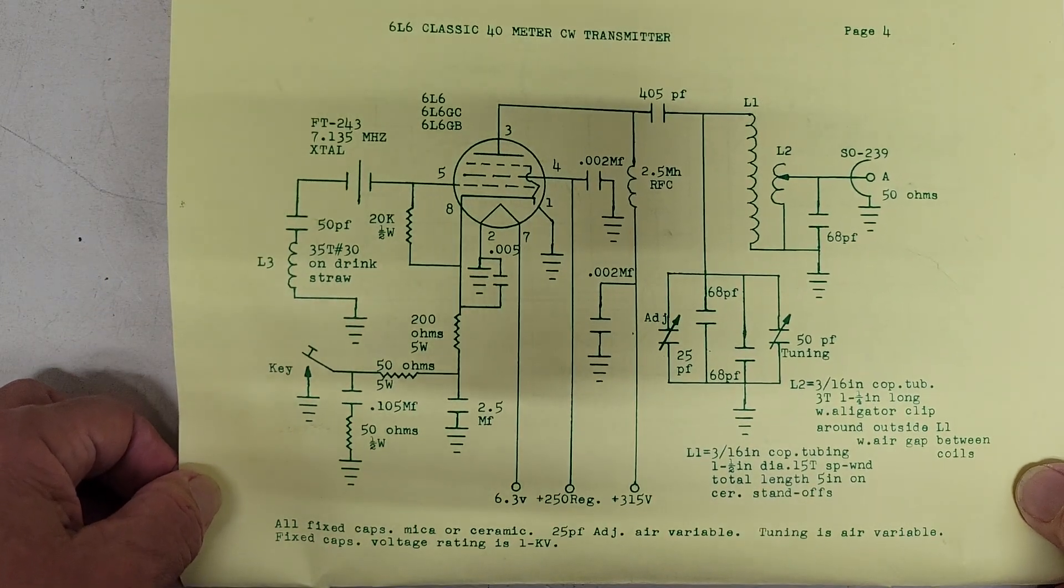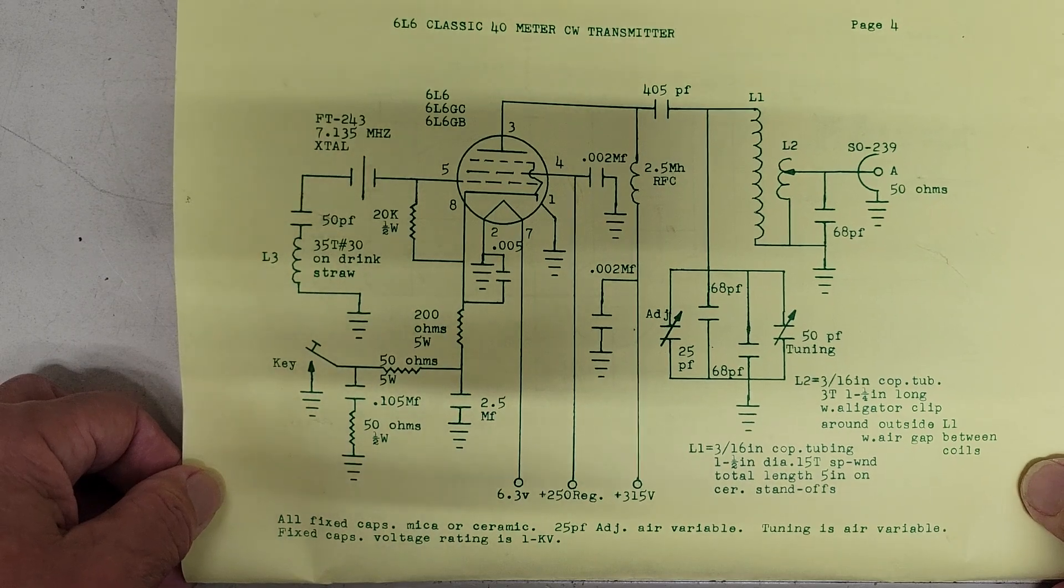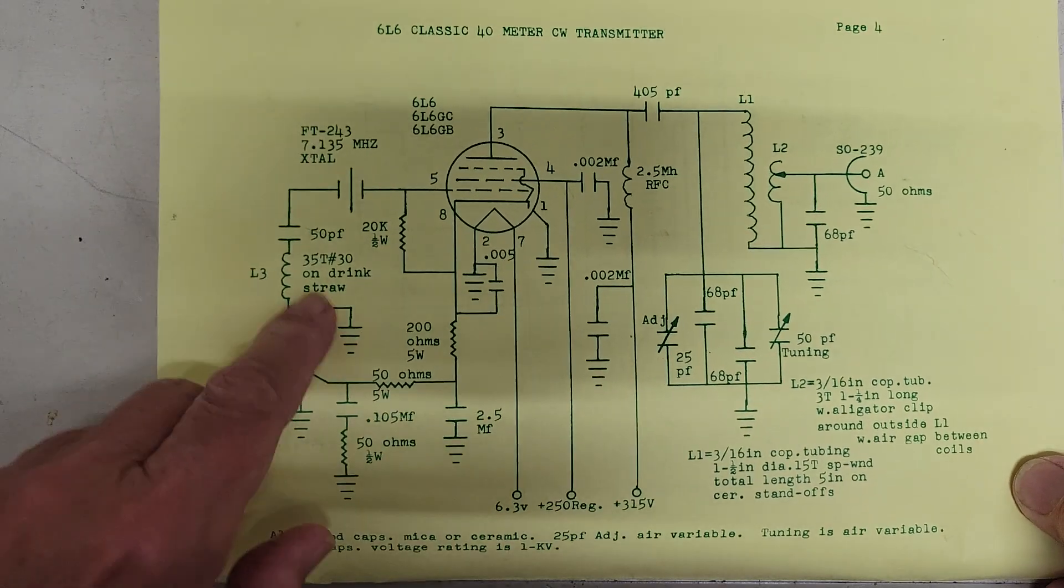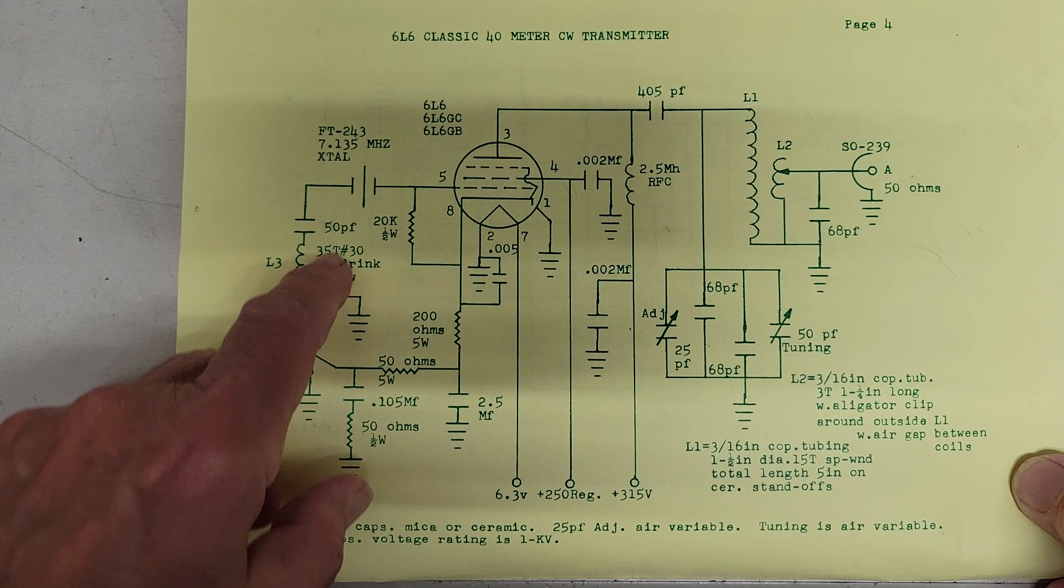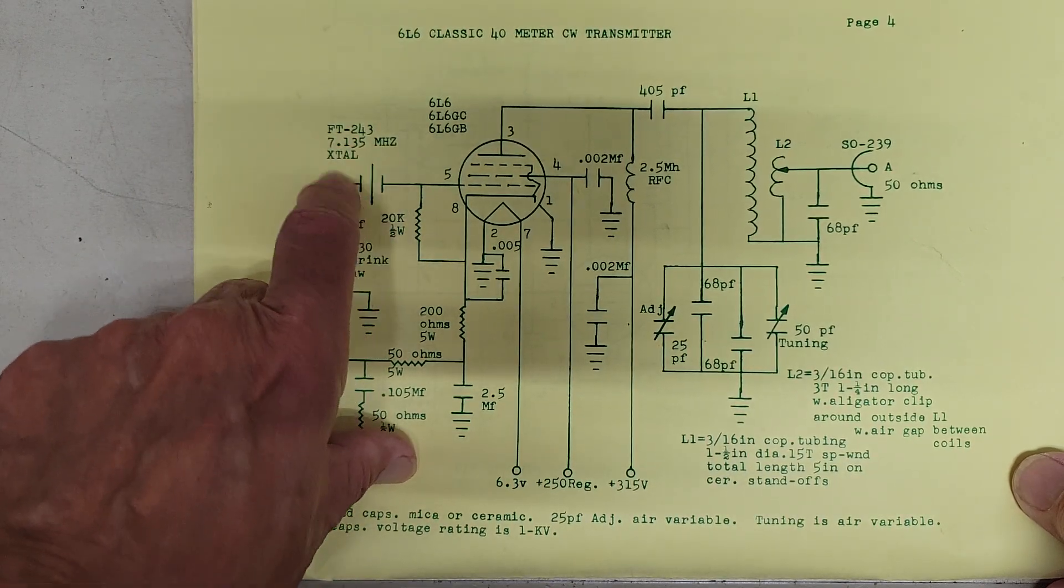Here's a little 40 meter CW transmitter, a 6L6, another drinking straw here. And this is, by the way, this is the crystal symbol he uses for the crystal.